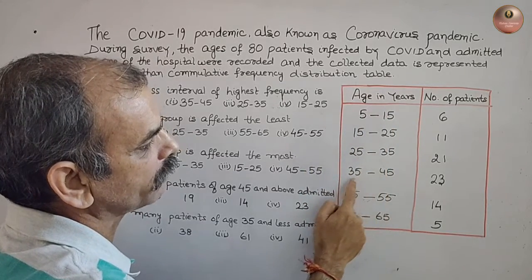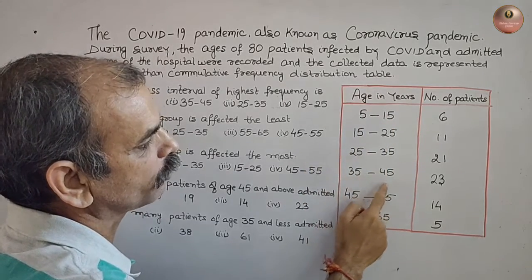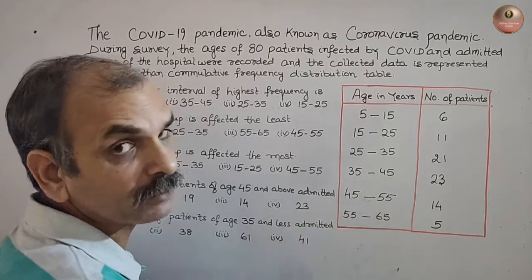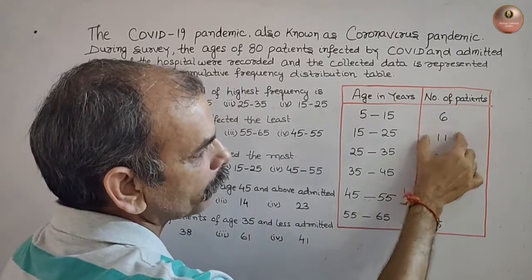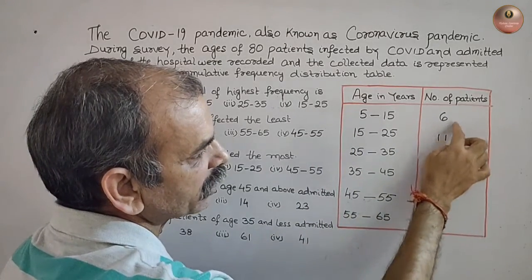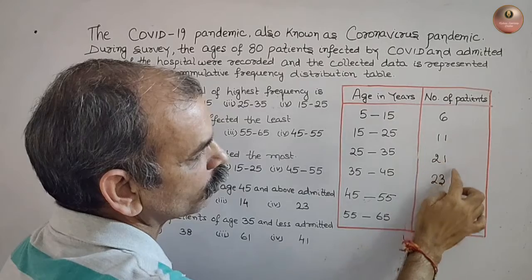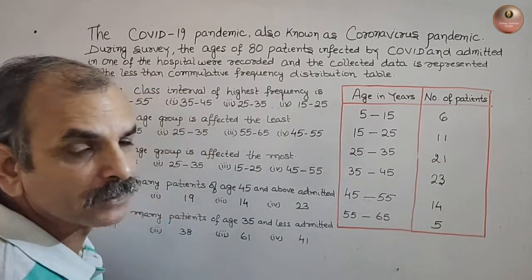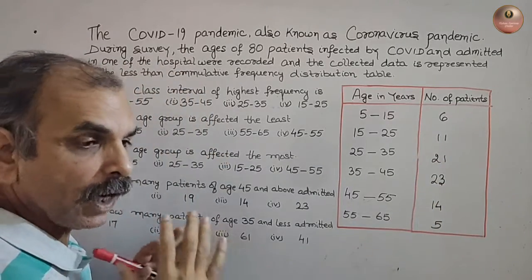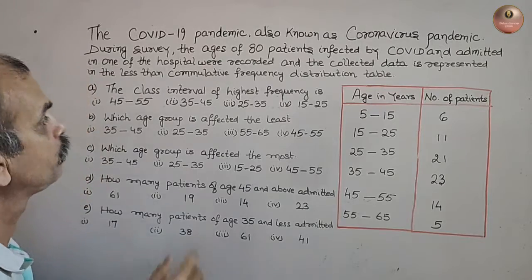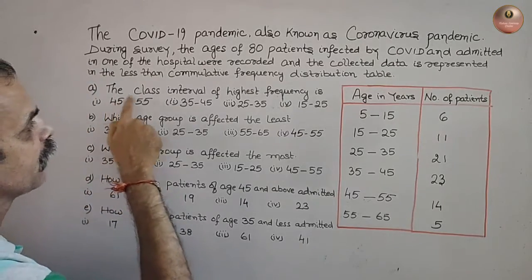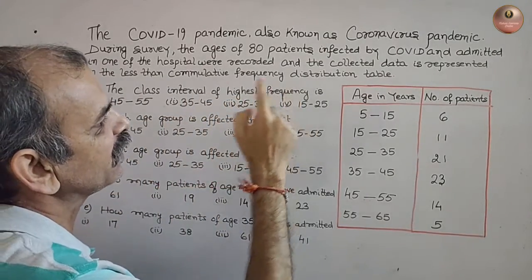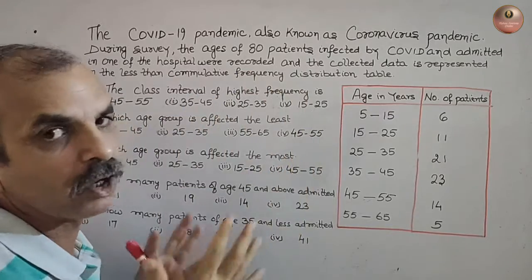The number of patients for each age group are: 6, 11, 21, 23, 14, and 9. Now let's look at the questions. Question (a): The class interval of the highest frequency is what? You have to find out the class interval.